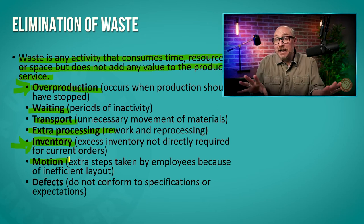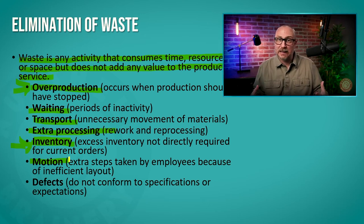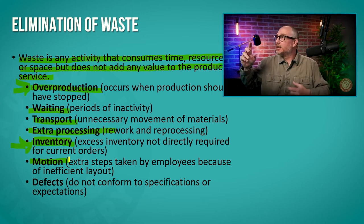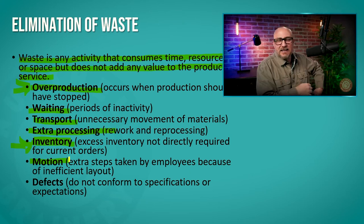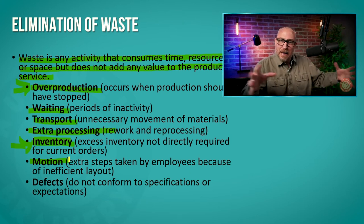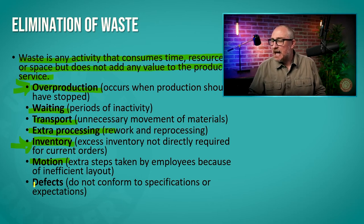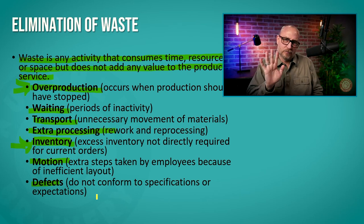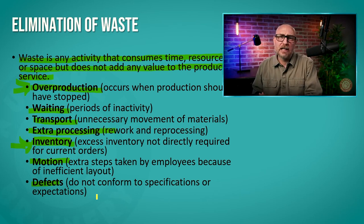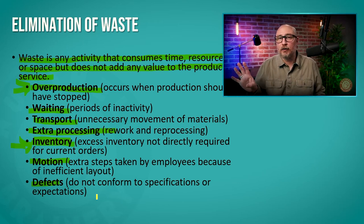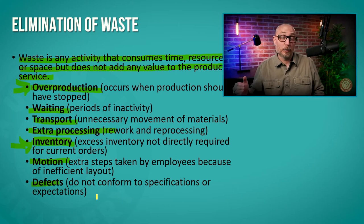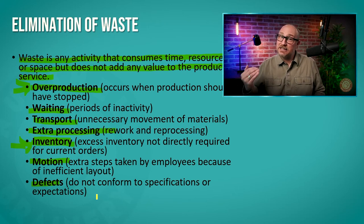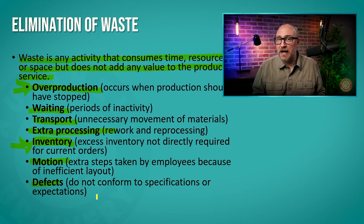Motion — how much we need to move to produce something — is wasteful, for instance if I need to climb up on things or dig down below in my manufacturing process. And then of course, defects. Defects are wasteful — that's obvious. So global production and Six Sigma really look for ways to increase the perceived value through quality and decrease the cost of manufacturing. That's how it makes more money.